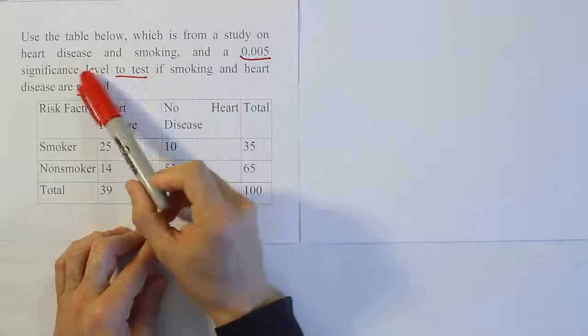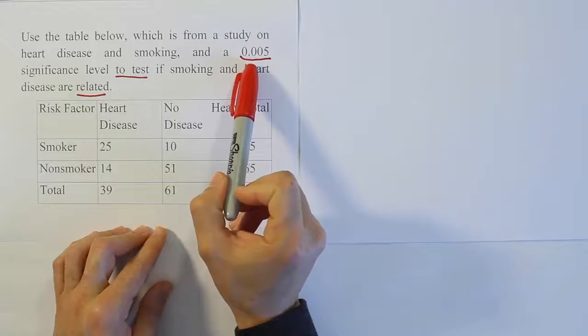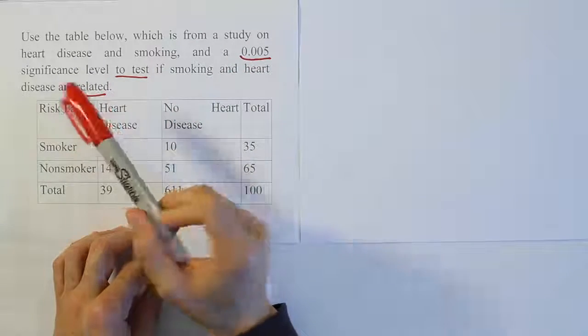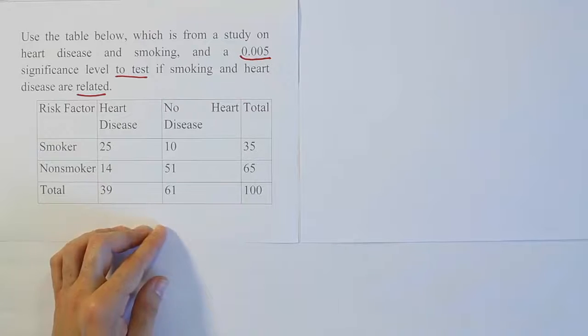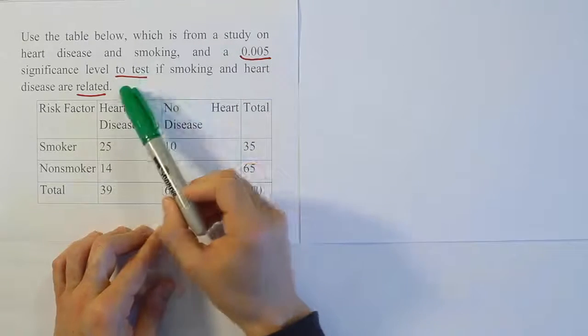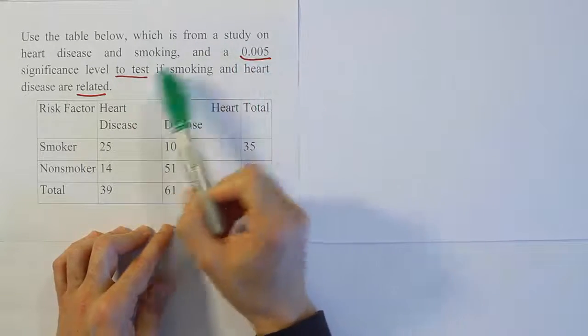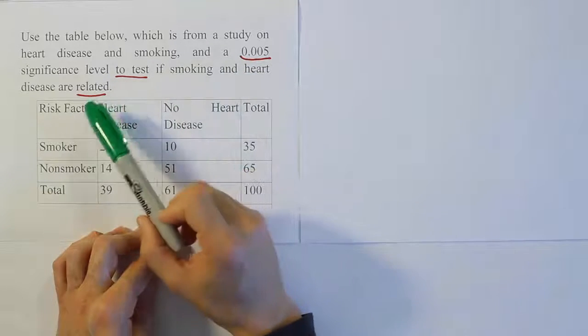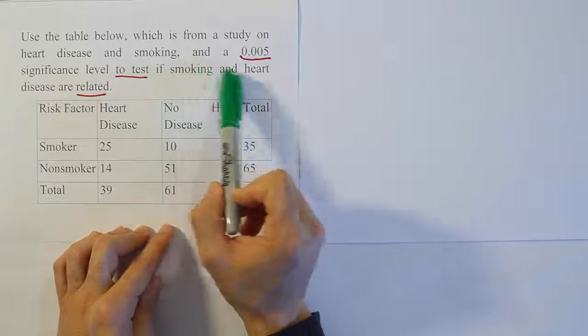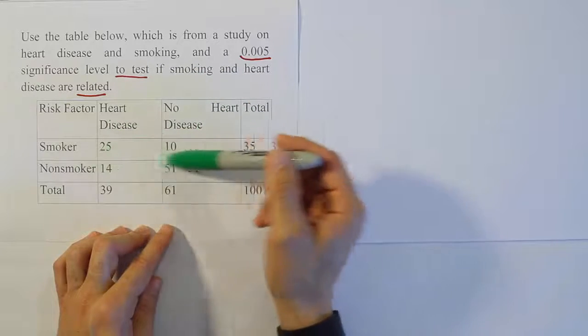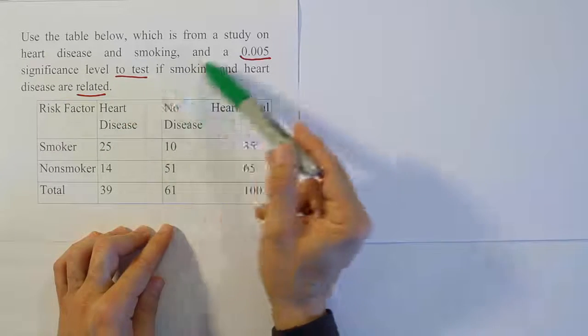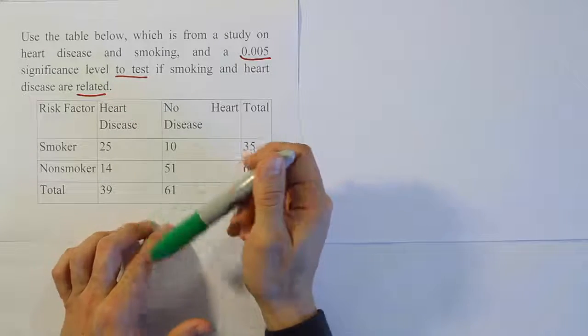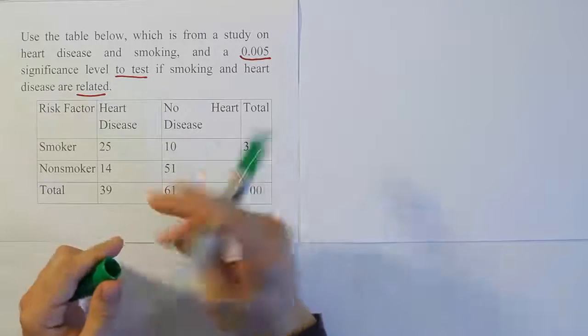Use the table below, which is from a study on heart disease and smoking, and a 0.005 significance level to test if smoking and heart disease are related. The phrases I've underlined clearly indicate we're dealing with a hypothesis test. We have a significance level, they're asking us to test something, and we're supposed to test that these two categories are related. The fact that there are two categories that we're looking at in this contingency table and trying to see if they are related, or in other words, dependent upon one another, indicates we're dealing with a chi-squared test for independence.